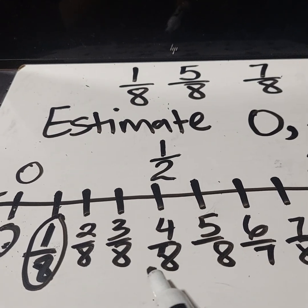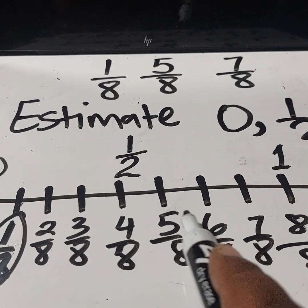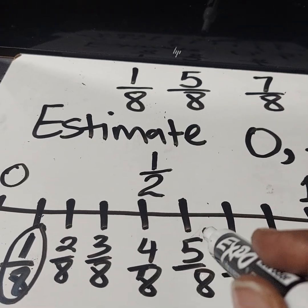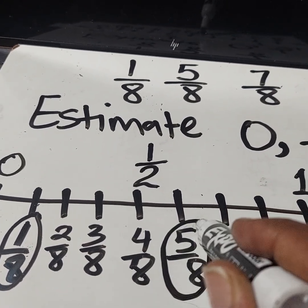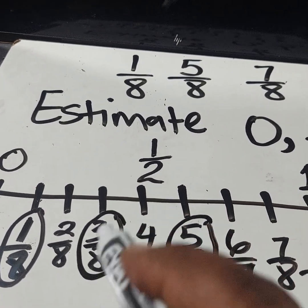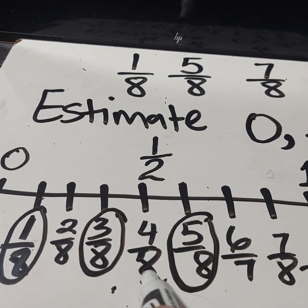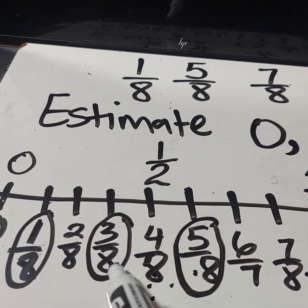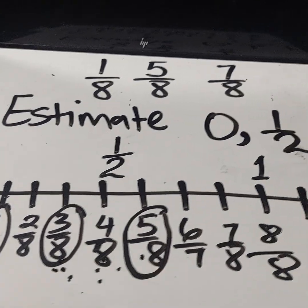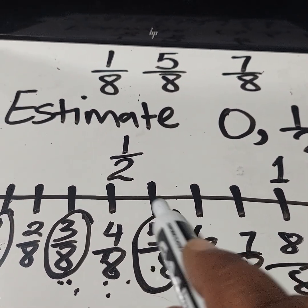So that's the reason why it makes sense for one eighth to be estimated to be zero. Four eighths is a half, exactly a half. So if you take a look at this number right next to four eighths is five eighths. So you would say five eighths is a little bit more than a half. Three eighths is a little bit less than a half because four eighths represents a half. To the right is more, to the left is less.